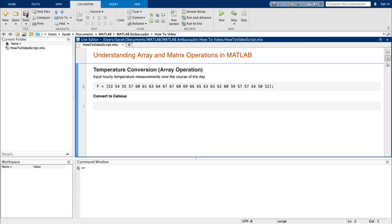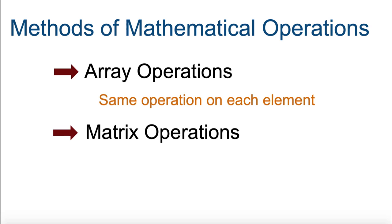An example of this would be if you measured the outside temperature every hour for 24 hours and stored the data in MATLAB. If I wanted to convert the temperature to Celsius, I could do the same operation on each element of my vector at once. C equals F minus 32 times 5 ninths, and don't forget the parentheses. We can see that each element in our temperature array went through the same operation.